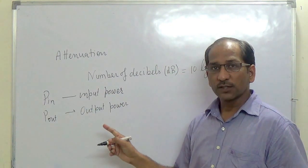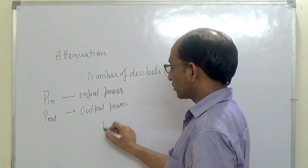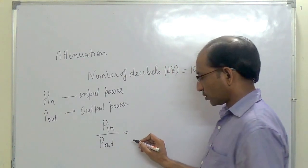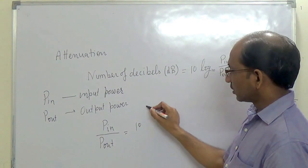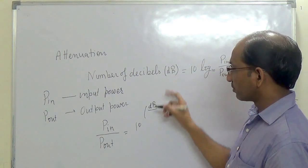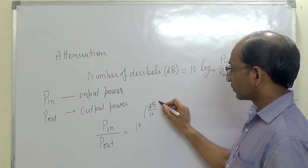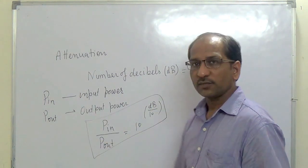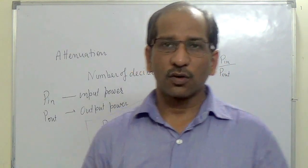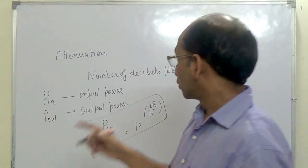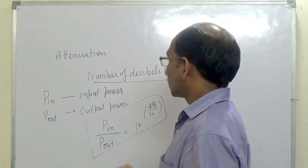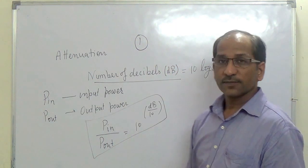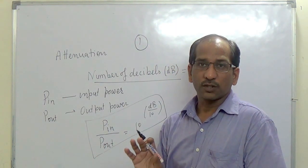The ratio of input to output can be written as P_in upon P_out is equal to 10 raised to the power of dB divided by 10. This is the formula to calculate the input-output ratio of the signal. This formula is used to calculate the attenuation for the whole length of the optical fiber.